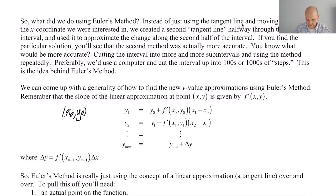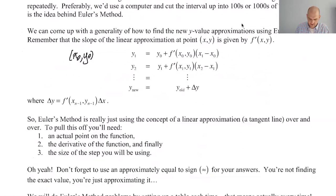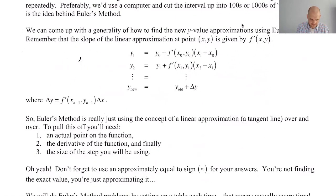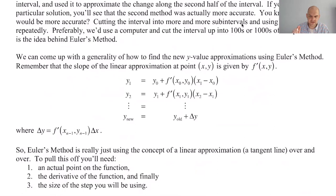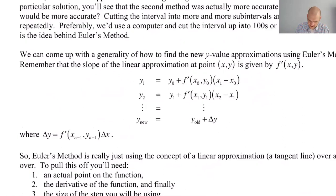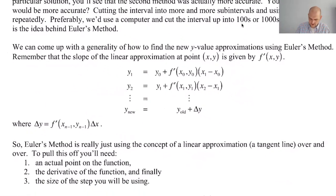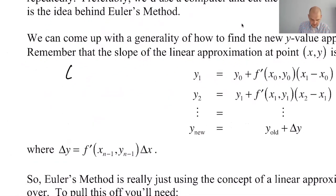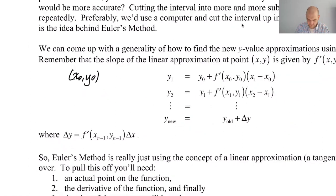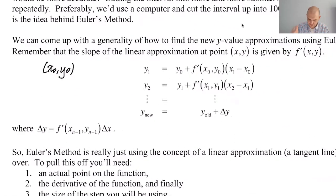That's the fundamental idea. So what we want to do is come up with the idea behind this. There's a notational thing I'm going to change as we go. We start out with an initial condition — just like with Newton's method, you've got to have an initial guess at what's happening. If you don't have an initial guess, you can't write your tangent line. So we need an initial given point.